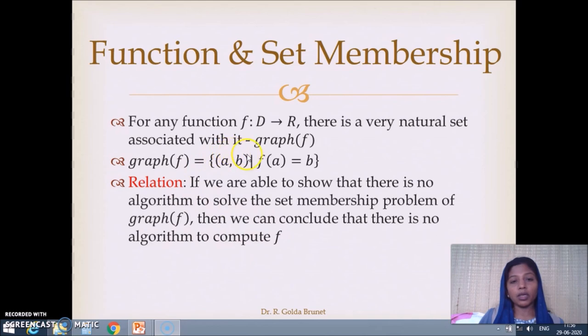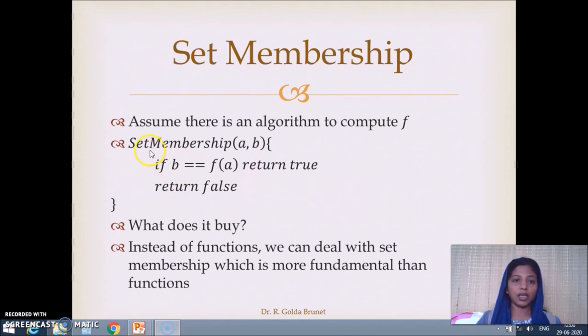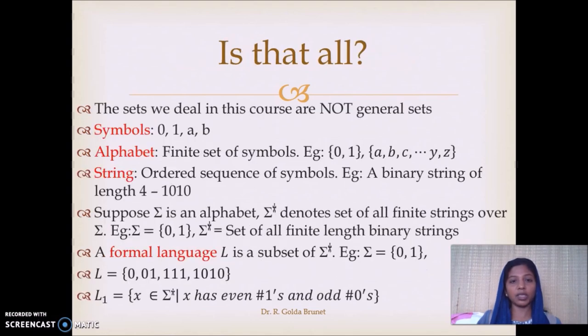Why? Because if you wanted to show the set membership of the graph of f, you have to compute f of a. That means you should have an algorithm to implement the function f. So, we can define the set membership like this. Assume there is an algorithm to compute f. So, the set membership accepts two inputs a and b and returns true only if b is equal to f of a, otherwise it returns false. So, why should we go from functions to set membership? Because set membership is more fundamental than functions. So, we can just concentrate on set membership. Is that all? We are yet to go a little further.